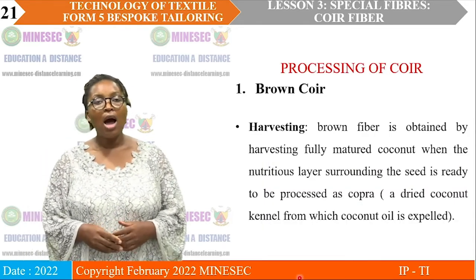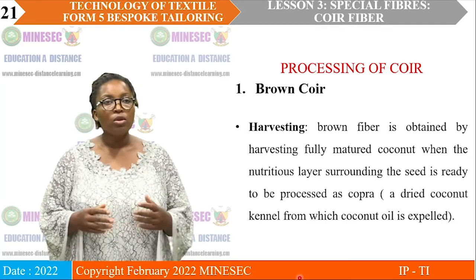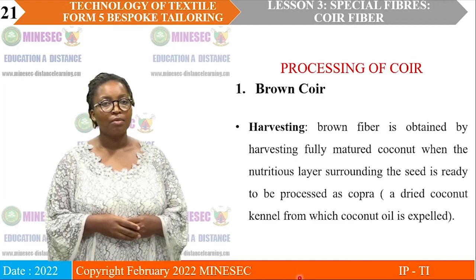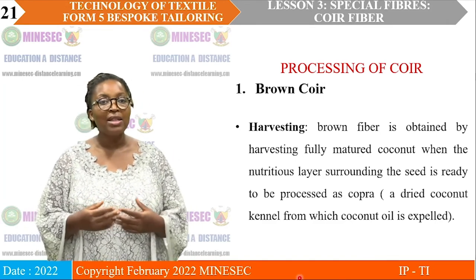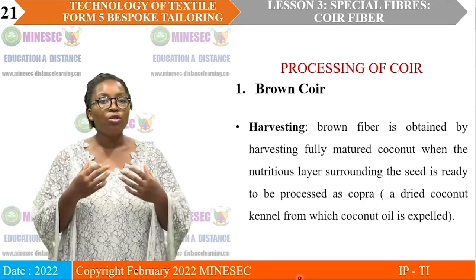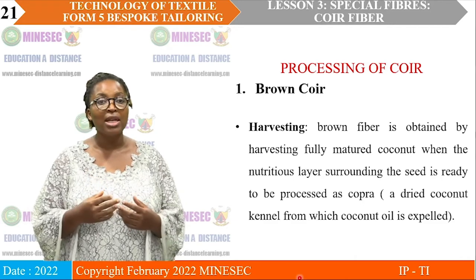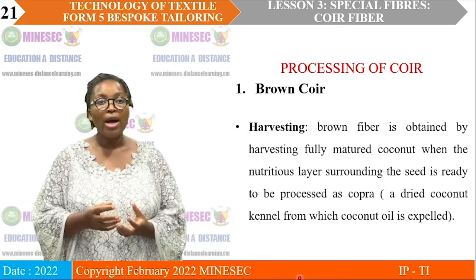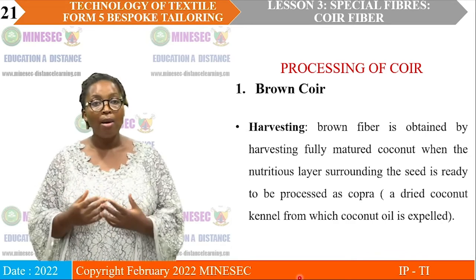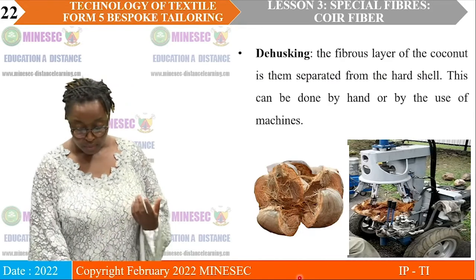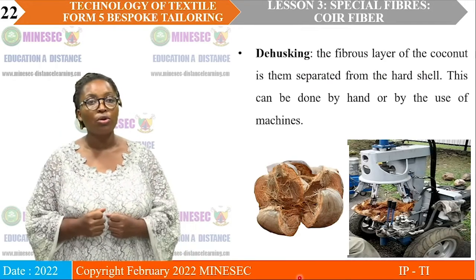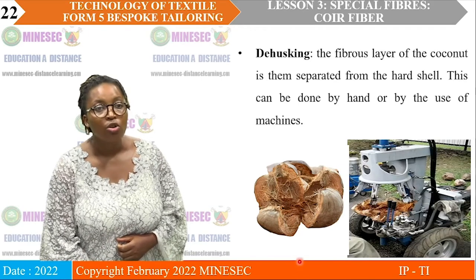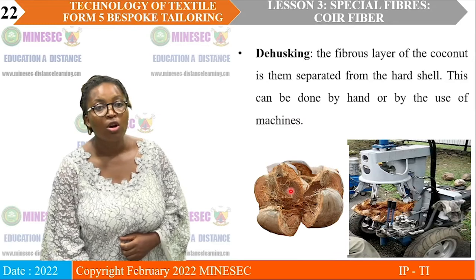Processing — how is Koi fiber processed? We start with the brown Koi. Step one is harvesting: it is harvested from matured coconut when the nutrient layer surrounding the seed is ready to be processed. Next is dehusking: after the coconut has been harvested, you separate the husk from the hard shell. This can be done manually using a cutlass, or mechanically using a dehusking machine.